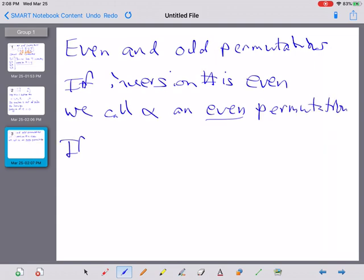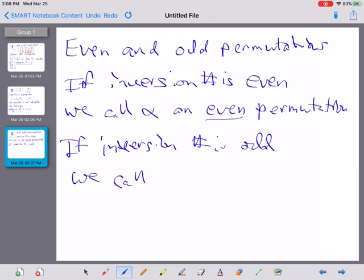And if the inversion number is odd, we call alpha an odd permutation.